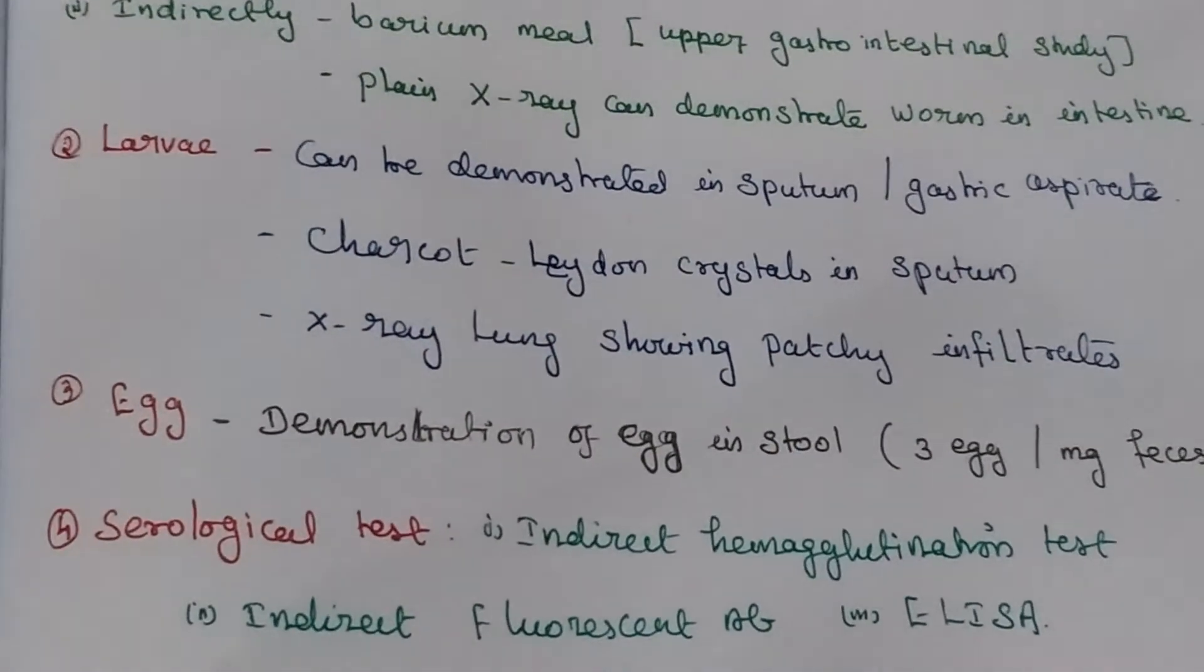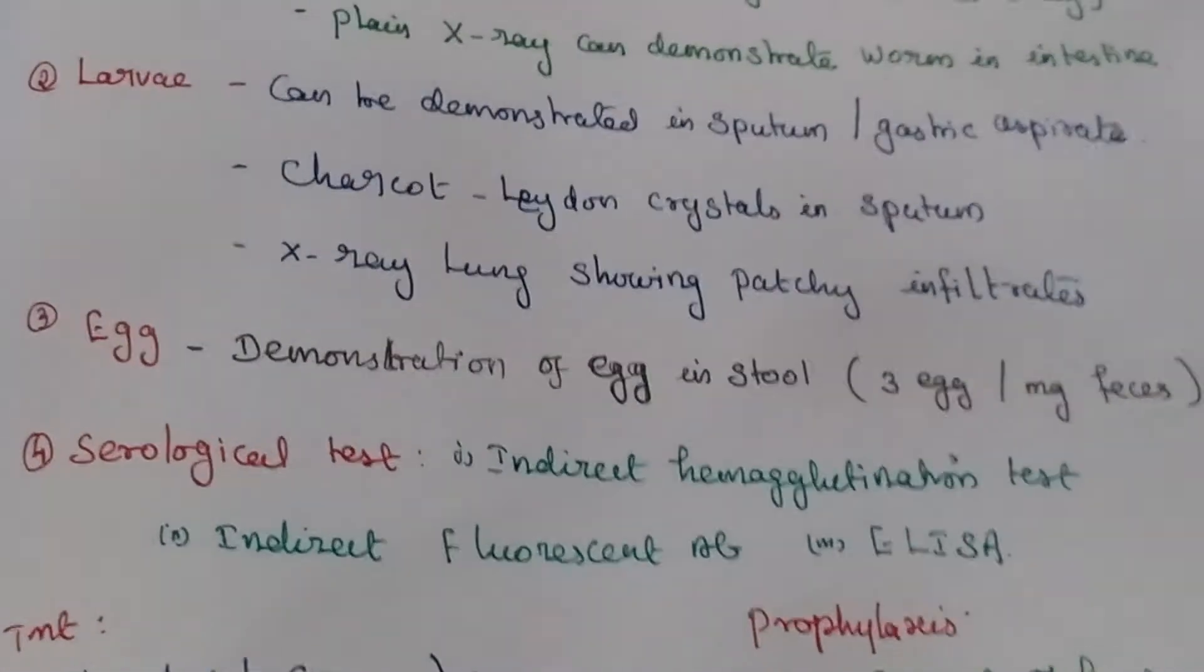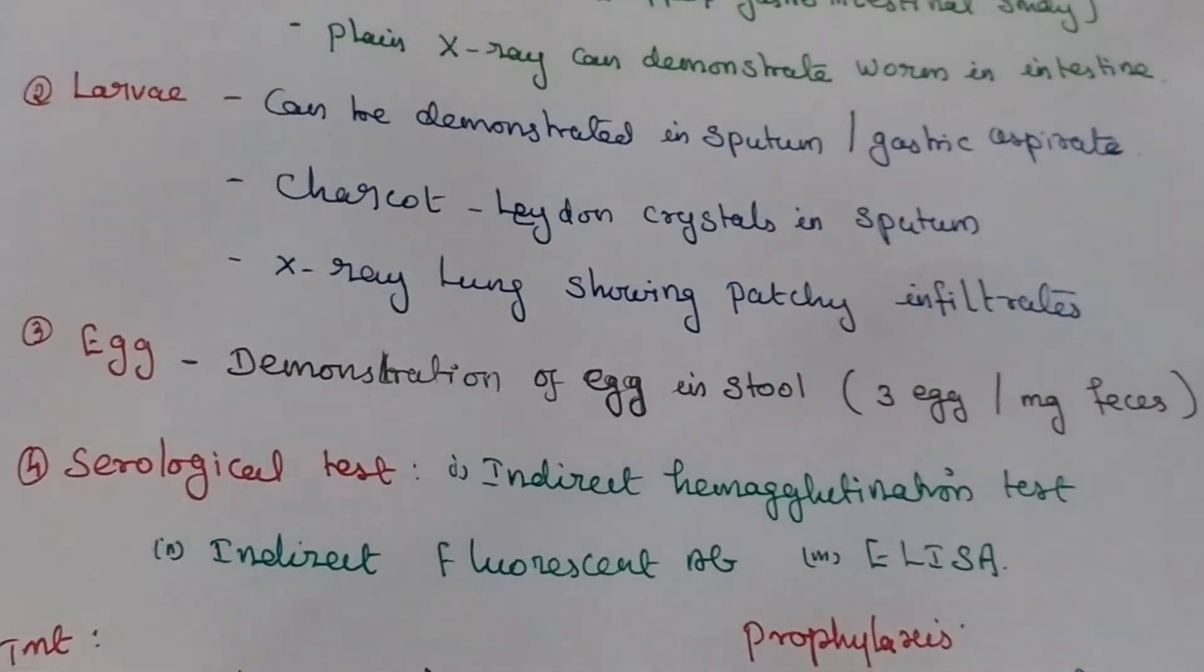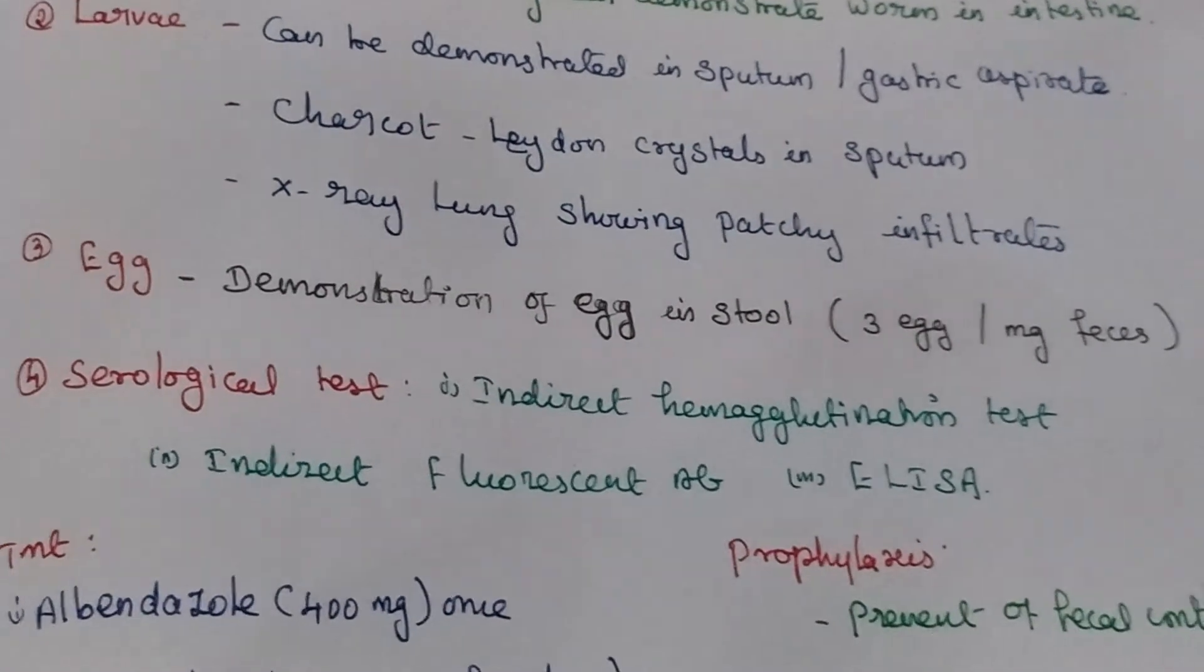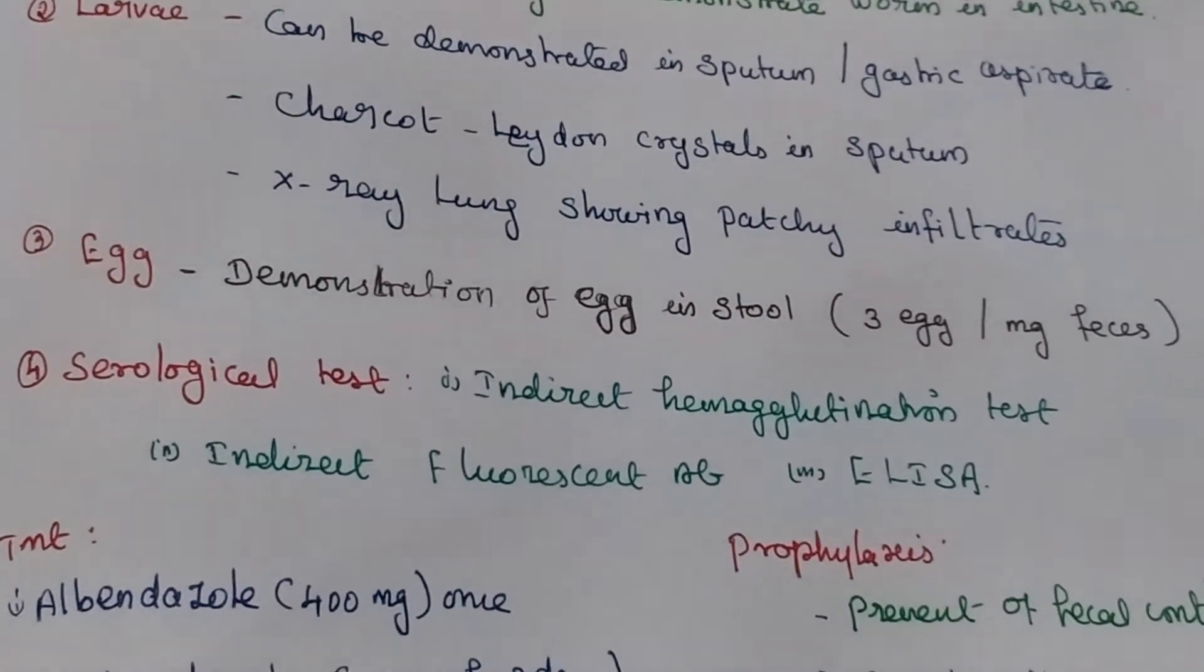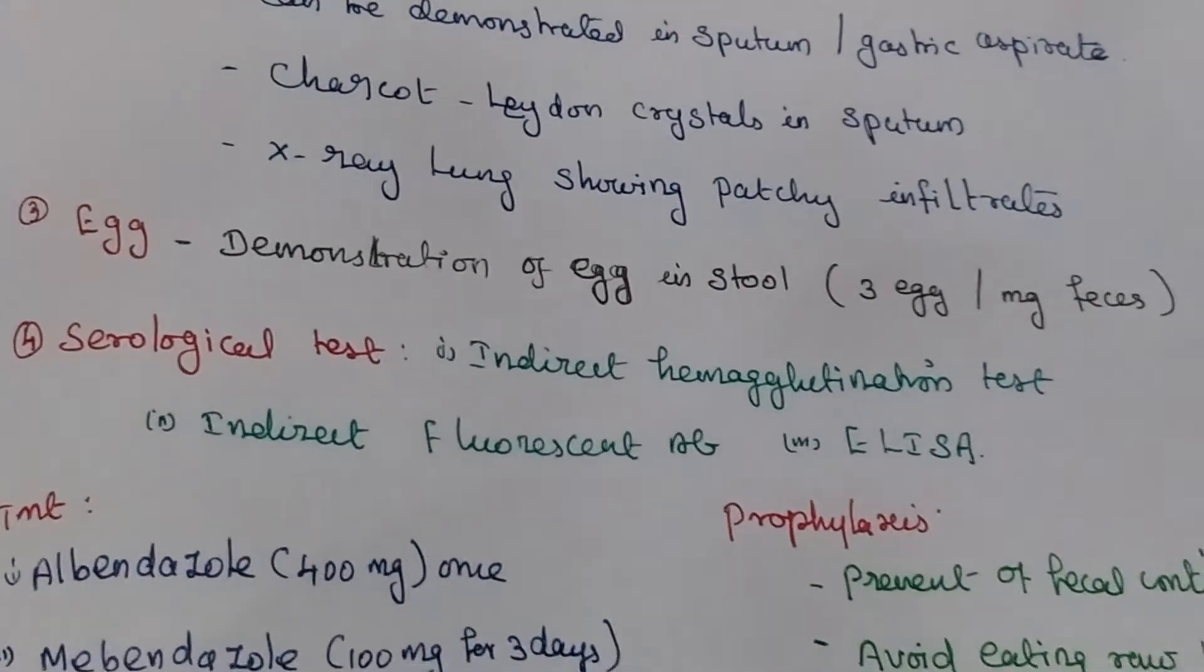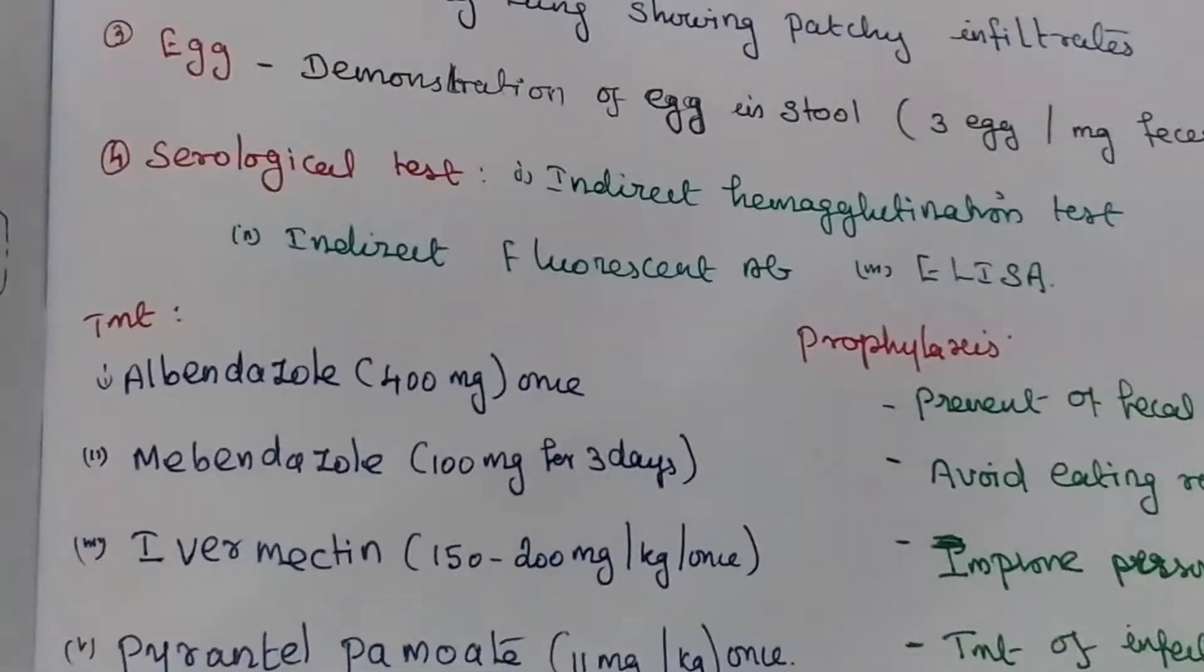Egg demonstration in stool samples. Three eggs per mg feces is contained. Serological technique: indirect hemagglutination test, indirect fluorescent antibody, and ELISA.